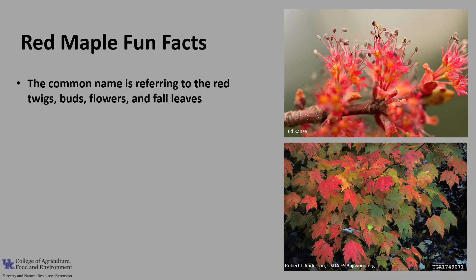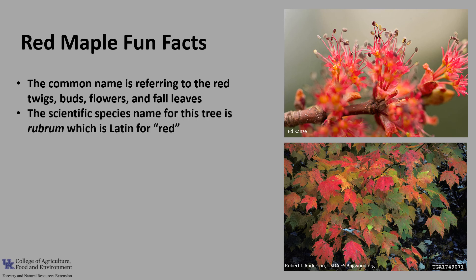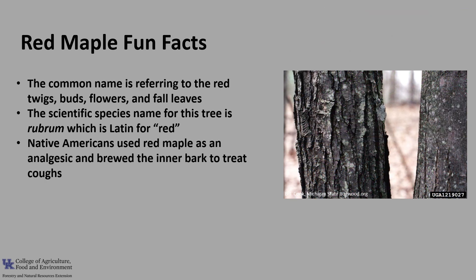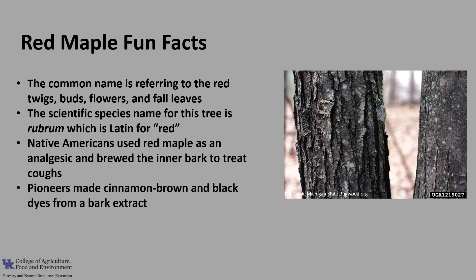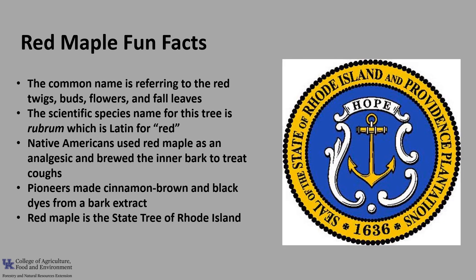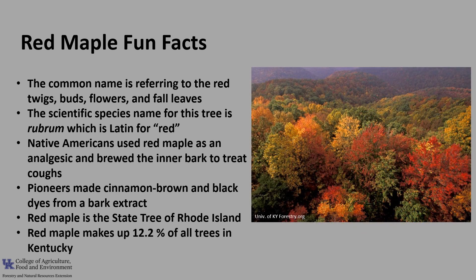Now for a few fun facts about red maple. The common name red maple refers to the red twigs, buds, flowers, and fall leaves. The scientific species name, rubrum, is Latin for red. Native Americans used maple as an analgesic and brewed the inner bark to treat coughs. Pioneers made cinnamon brown and black dyes from a bark extract. Red maple is the state tree of Rhode Island, and red maple makes up over 12 percent of all trees in Kentucky according to the Kentucky Division of Forestry.